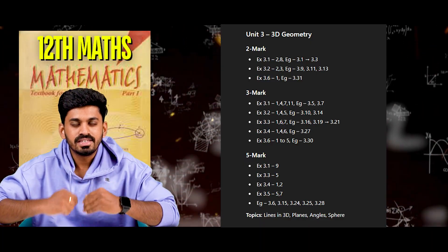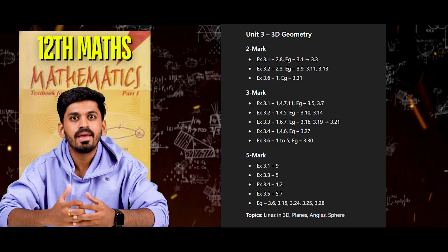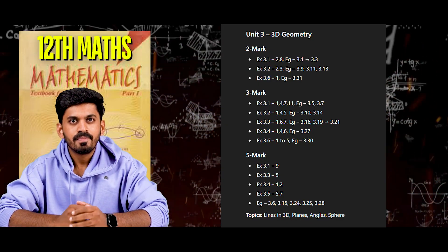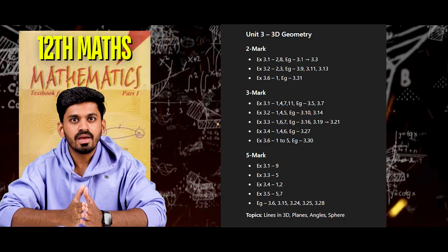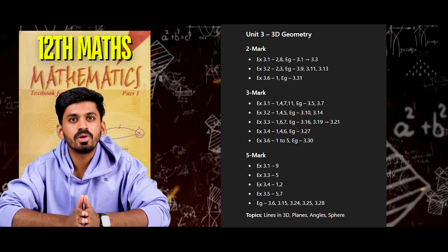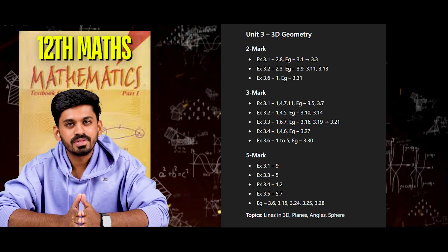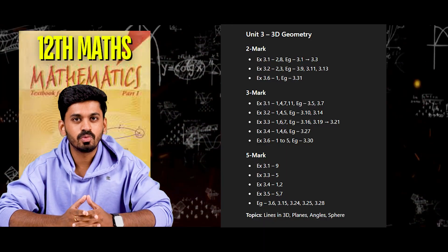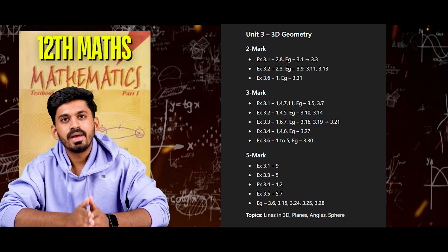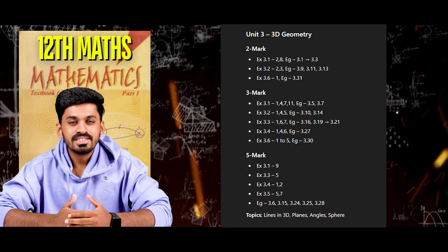Unit 3, 3-mark questions: Exercise 3.1 law 1, 4, 7, 11. Examples 3.5 and 3.7. Exercise 3.2 law 1, 4, 5. Examples 3.10, 3.14. Exercise 3.3 law 1, 6, 7. Examples 3.16, 3.19, 3.20, 3.21. Exercise 3.4 law 1, 4, 6. Example 3.27. Exercise 3.6 law 1, 2, 3, 4, 5. Example 3.30.